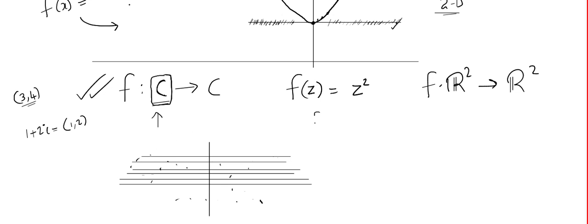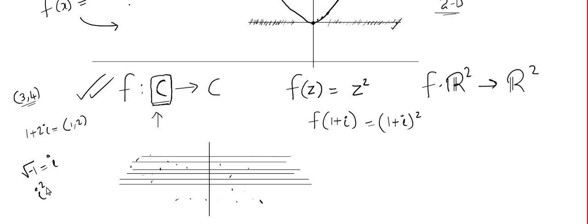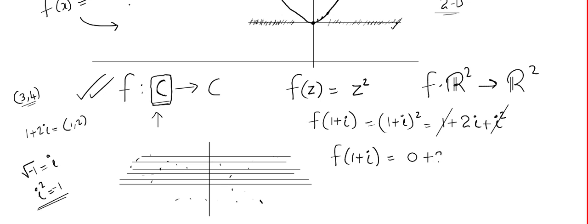Suppose you input a complex number — let us say we input 1 + i. The output will be (1 + i)². Remember from high school that the square root of minus 1 is i, and i² = -1. Expanding, we get a² + 2ab + i², and since i² = -1, we get f(1 + i) = 0 + 2i. So the input is 1 + i and the output is 0 + 2i.